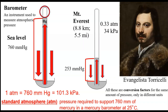At the top of Mount Everest, the pressure is only 253 millimeters of mercury. You might also see this expressed as 253 torr — a unit named after Torricelli. You don't hear 'torr' as often as 'millimeters of mercury,' but it's worth knowing if you encounter it.